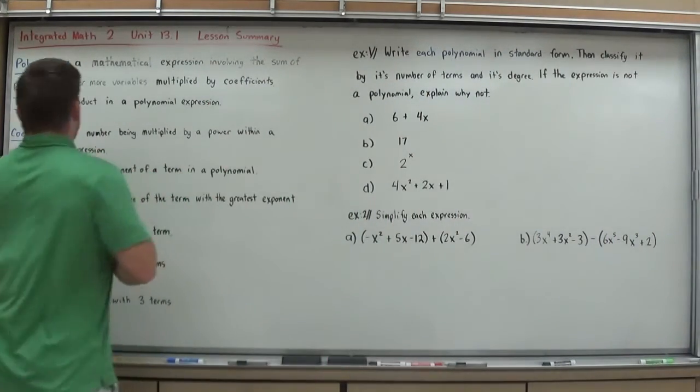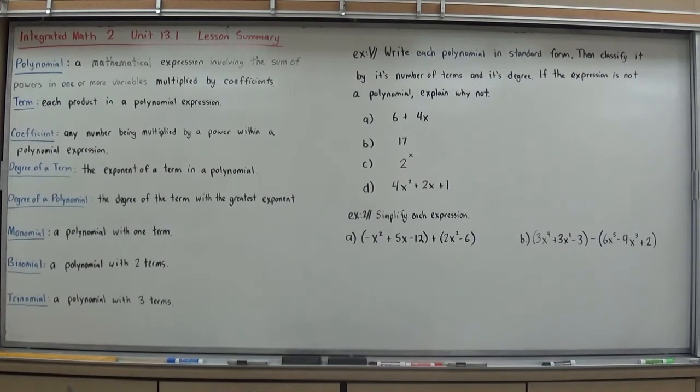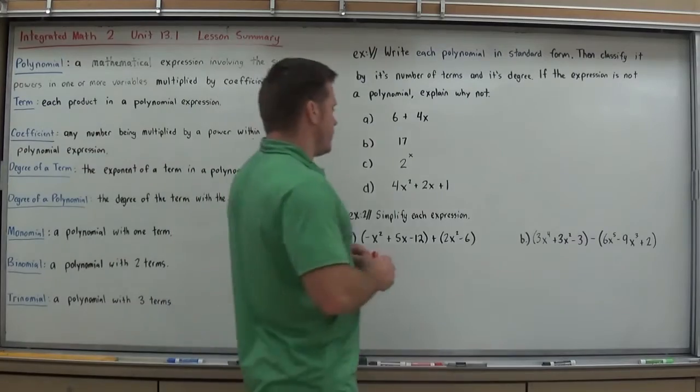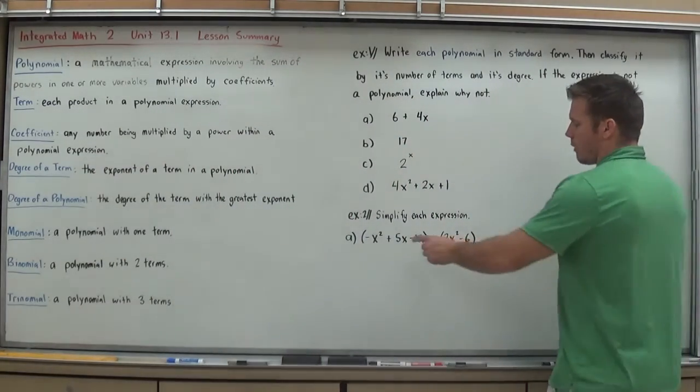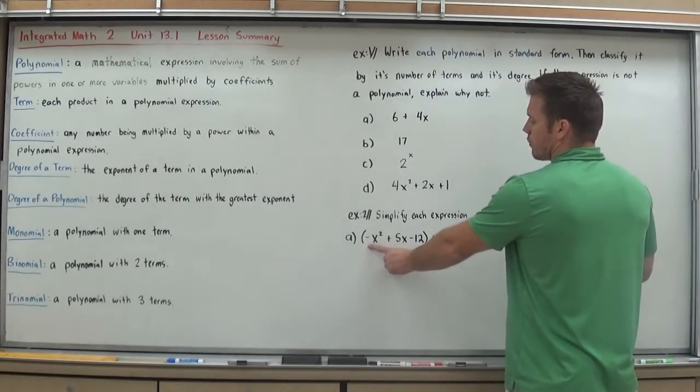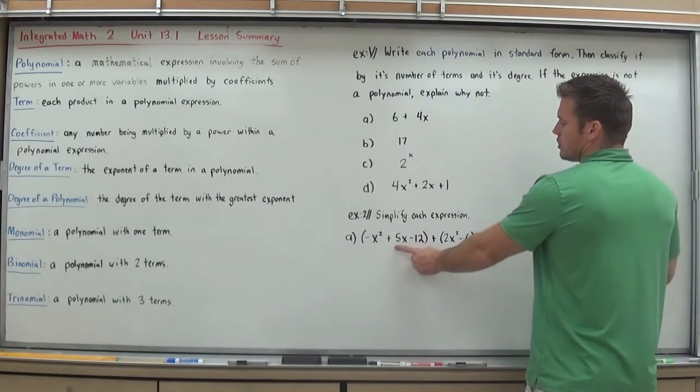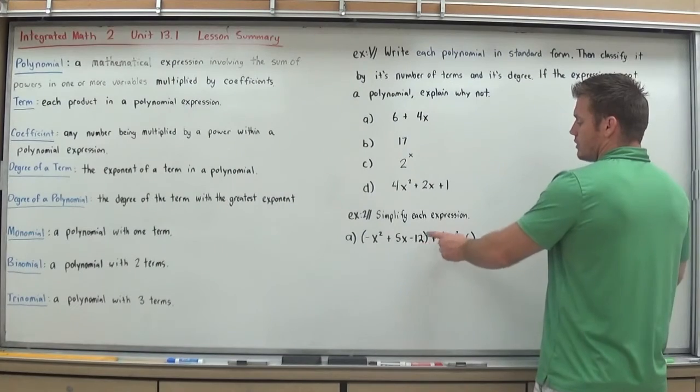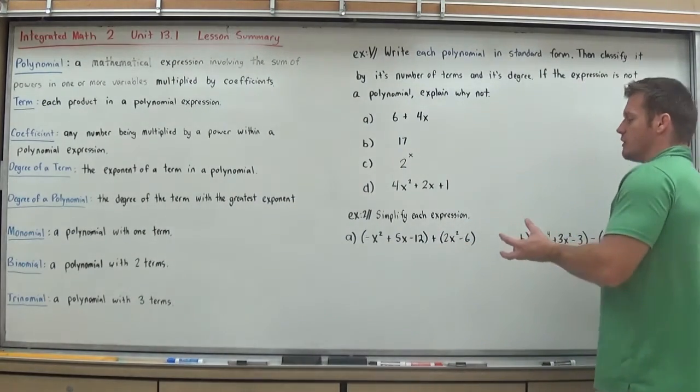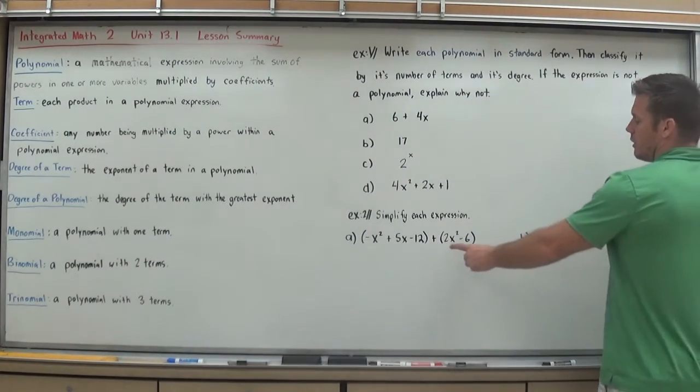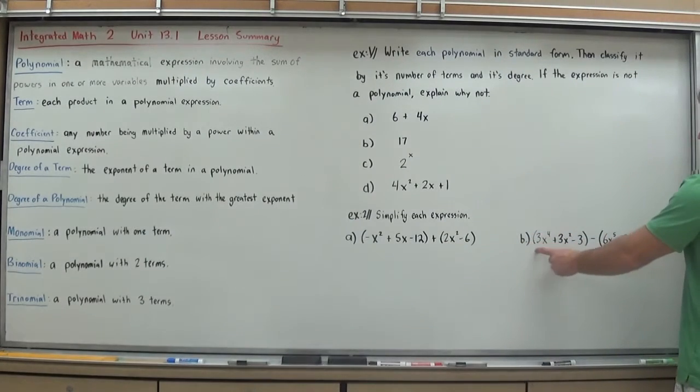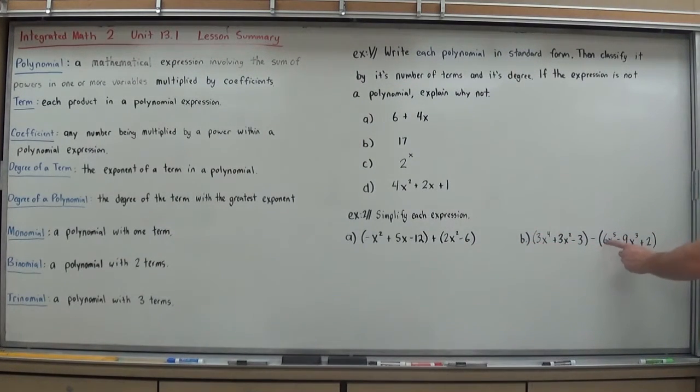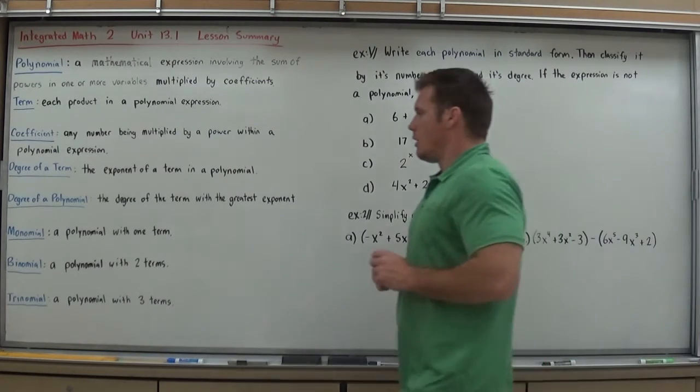What is a coefficient? A coefficient is any number being multiplied by a power within a polynomial expression. So a coefficient is that number being multiplied to a variable in its power. My coefficient here for x squared, negative 1. My coefficient here for x, 5. My coefficient here for 12, well there is no variable, so negative 12 is the constant there. Not really a coefficient. Coefficient here, 2, 3, 3, no variable, no coefficient. 6, negative 9, no variable, no coefficient.